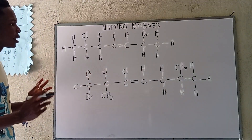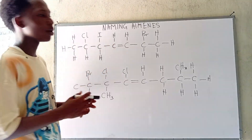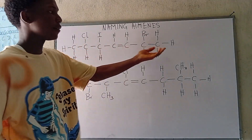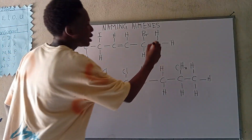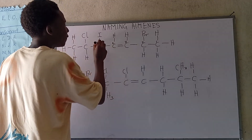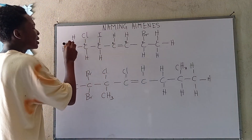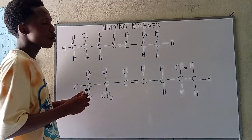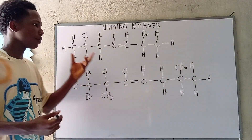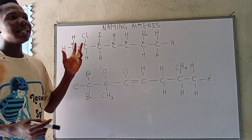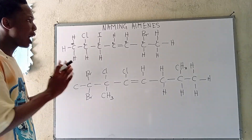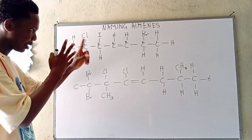Counting from this side, before we get to the double bond it will be farther, so we count from this side. We have one, two, three, four, five, six, and seven. We now know the position of the double bond is at the third carbon. We've also gotten that there is a total of seven carbons, which means it is hept.